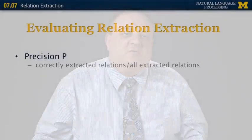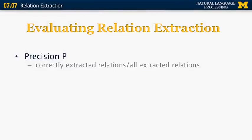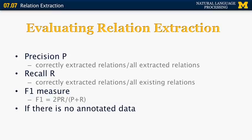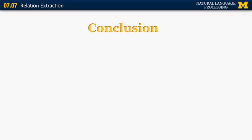Now let's look at the different ways in which we can evaluate relation extraction. Relation extraction is essentially a classification task. We want to measure things like precision, which is the number of correctly extracted relations divided by the number of all extracted relations. And recall, which is the number of correctly extracted relations divided by all the existing relations. And you can also combine the two into F1 measure, which is the harmonic mean of precision and recall. Now, all those metrics work well if we have annotated data. But if there is no annotated data, it's not possible to measure recall because we don't know what we're missing. We can only measure precision.